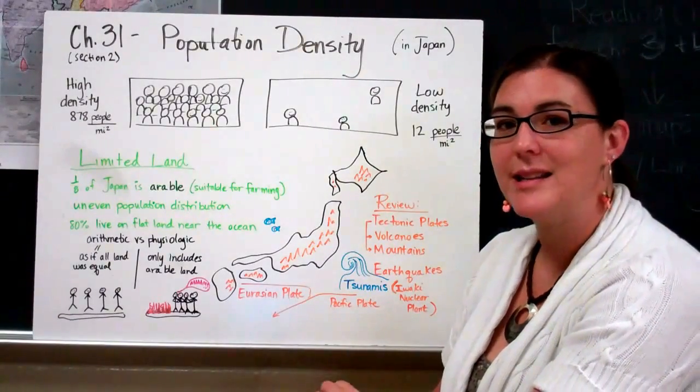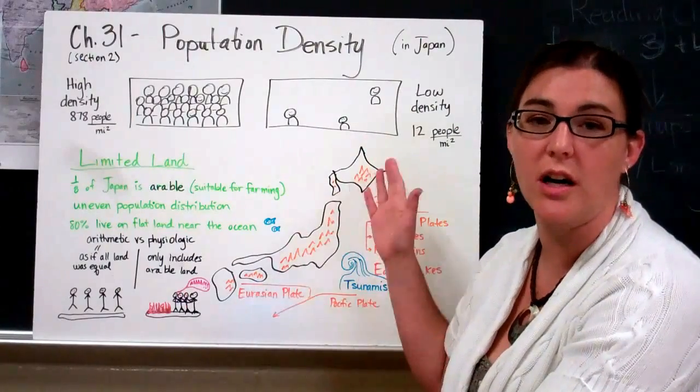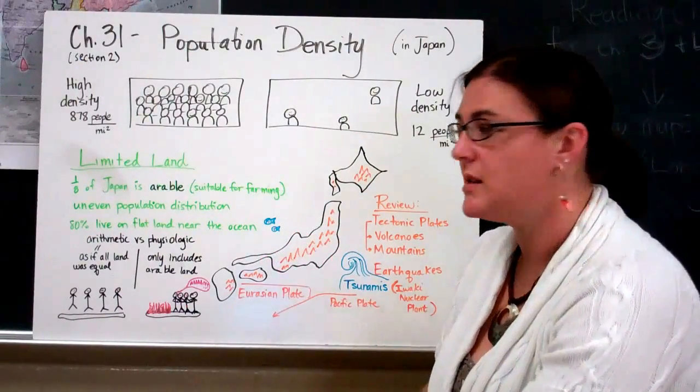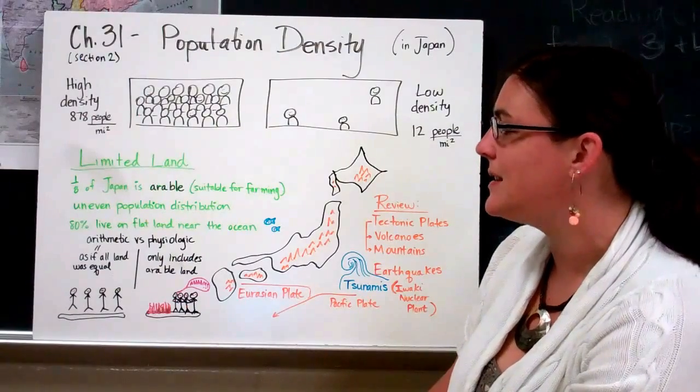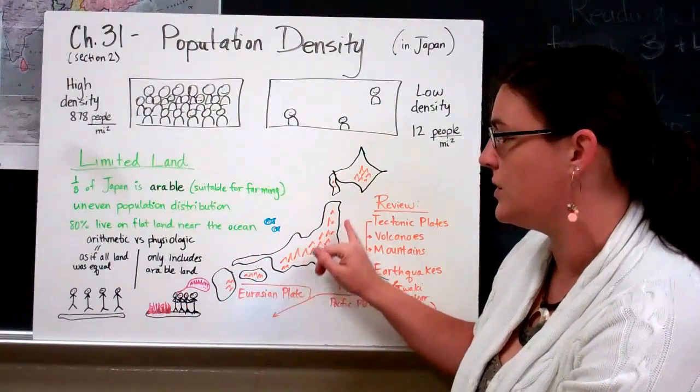This creates an uneven population distribution. It's not like people can spread out anywhere they want on the islands of Japan. They have to live where living is possible. So 80% of the people in Japan live on the flat areas near the coasts.